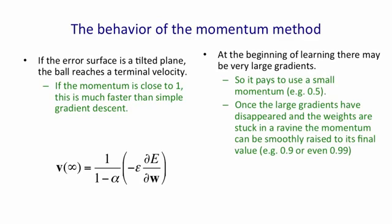Once the large gradients have disappeared, and you've reached the sort of normal phase of learning, where you're stuck in a ravine, and you need to go along the bottom of this ravine without sloshing to and fro sideways, you can smoothly raise the momentum to its final value, or you could raise it in one step, or that might start an oscillation.